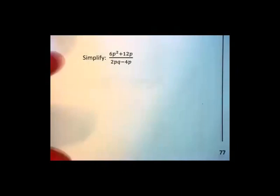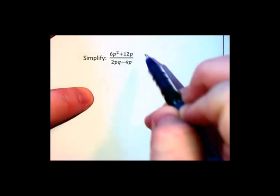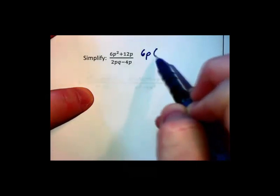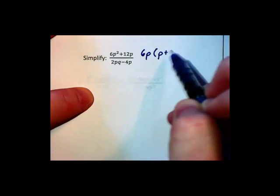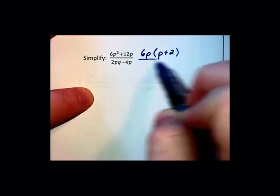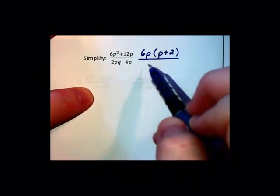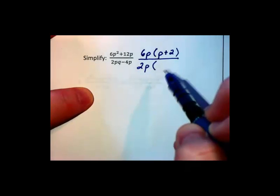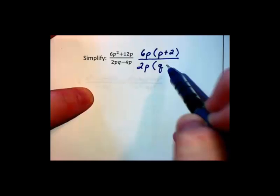Let's do one more of these before we move on to something else. In this next expression, we notice that the greatest common factor in the numerator is 6p. Dividing it out, we have leftover p+2 in the numerator.